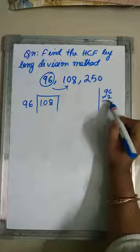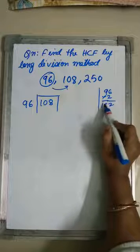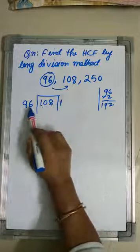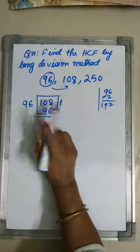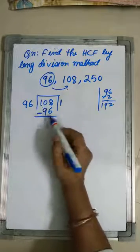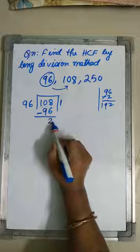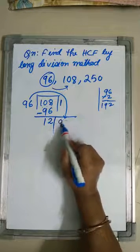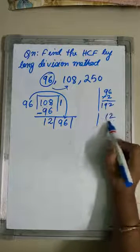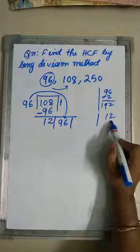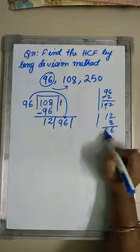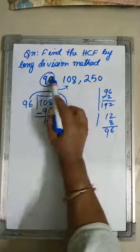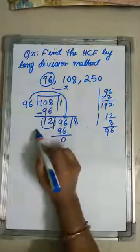How many times can I divide 108 by 96? 96 into 1 is 96. Write 1 as quotient. Subtract: 108 minus 96 gives remainder 12. Now bring 96 down as dividend. 12 into 8 is 96, so divide 8 times. 96 minus 96 gives remainder 0. So the HCF of 96 and 108 is 12.